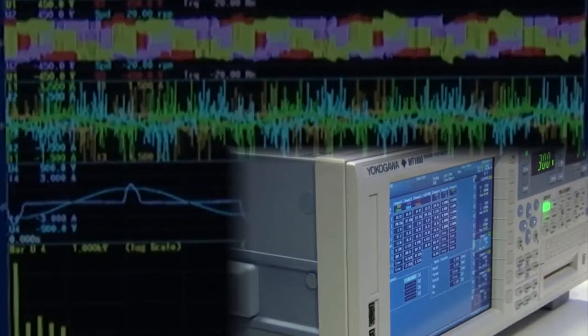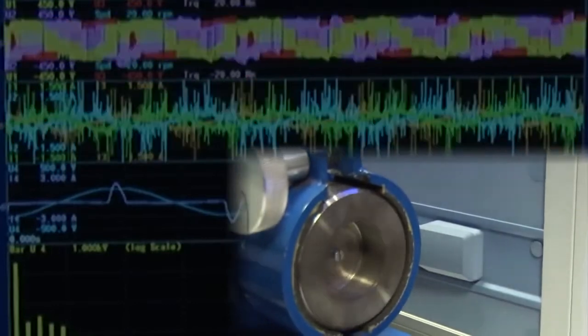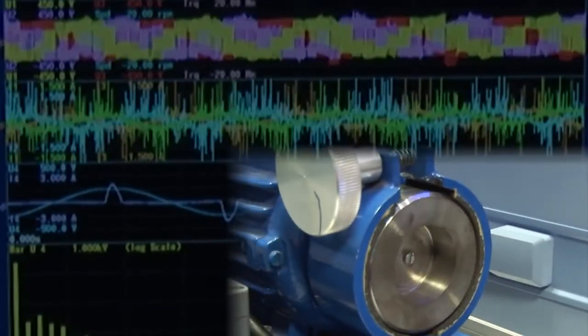A single WT1800 enables users to measure power, frequency and motor output in order to measure the inverter, motor and total efficiencies. The motor version of WT1800 makes it possible to simultaneously monitor changes not only with voltage, current and power but also with rotation speed and torque caused by the dynamic load.